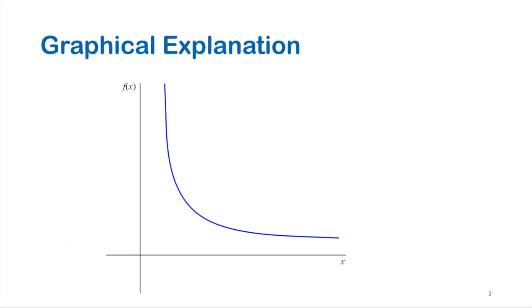The finite differences method can be explained graphically by the following simple steps. First, let's start with the curve of the function f of x. Suppose we need to find the first derivative of the function at the point x_i and corresponding f of x_i. Theoretically, the value of the derivative is equal to the slope of the tangent line at x_i. Our goal now is to construct a line parallel to the tangent by using the given function and known points in order to find its slope.